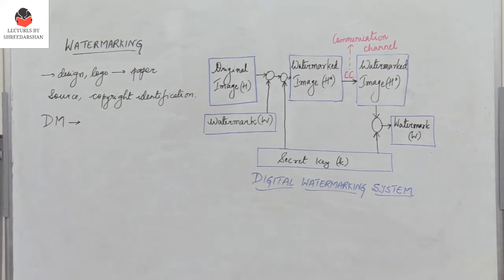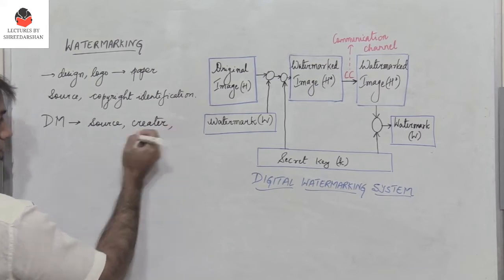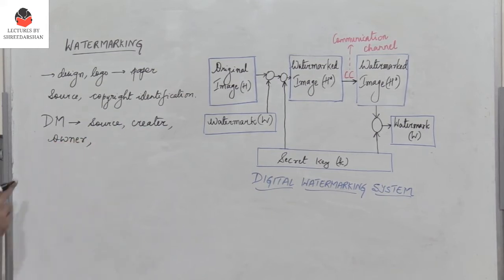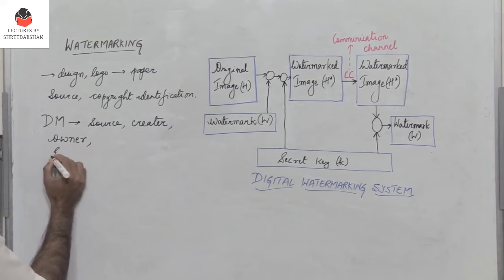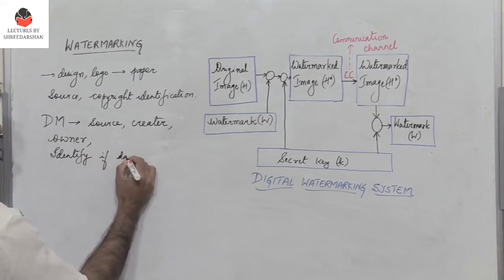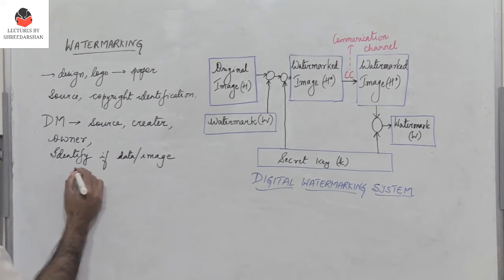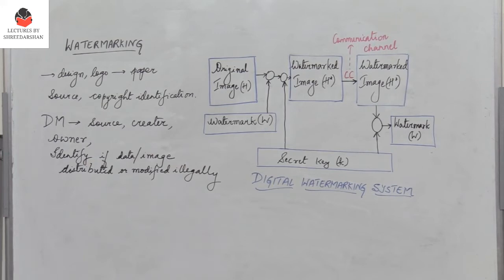Digital watermarking is a tool used to identify the source, the creator of the data, and the owner. It is also used for copyright protection. This is done to identify if there are any illegal copies of the digital data being made, and to identify if the digital data or image has been reproduced or distributed illegally.